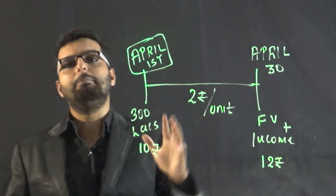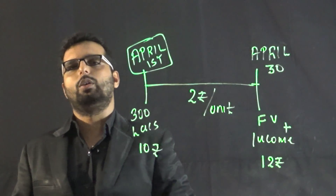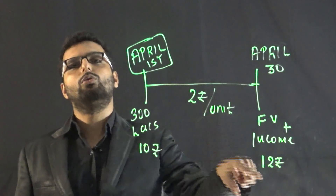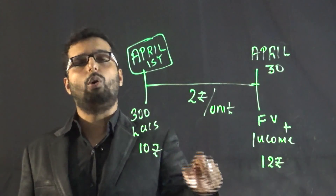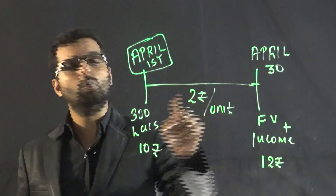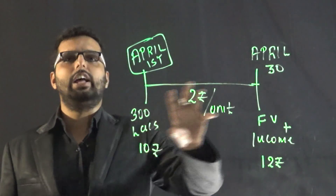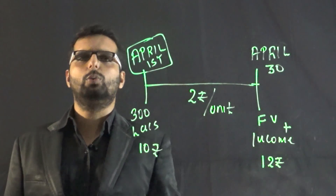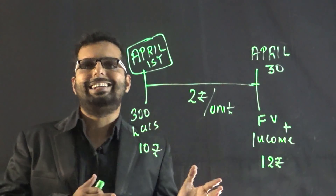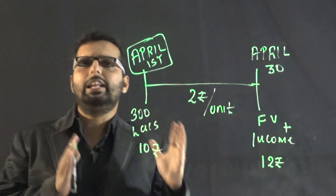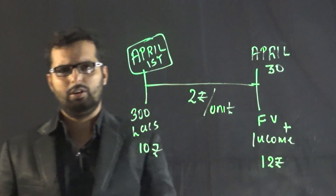Similarly, if somebody is leaving the mutual fund, they should also be given the 10 rupees here plus the 2 rupees here. By doing so, they are eligible for 12 rupees in total, because they will not be entitled to any more income coming after April 30th.